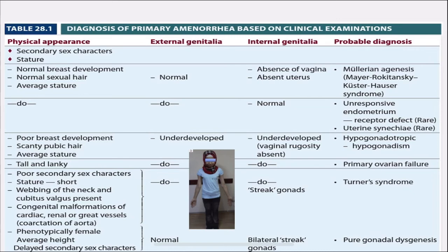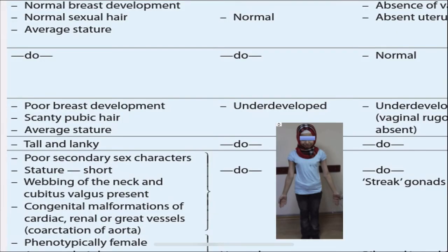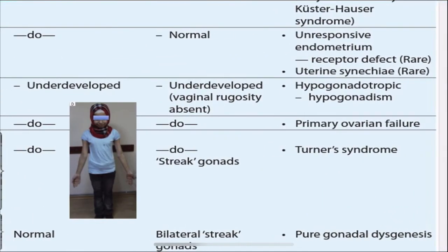Turner's syndrome: poor secondary sexual characters, short stature, webbing of the neck, cubitus valgus, congenital malformations of cardiac, renal, and great vessels including coarctation of the aorta. The breast is poorly developed. On examination, external genitalia is underdeveloped, internal genitalia is underdeveloped with streak gonads — diagnose Turner's syndrome.